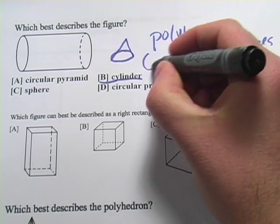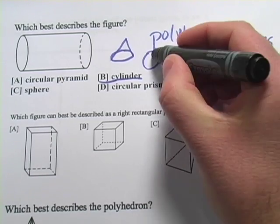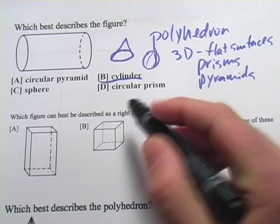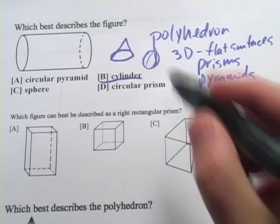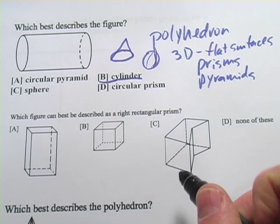A sphere, of course, is just a ball. And then a circular prism, I guess that might be a logical name, another name for a cylinder, but cylinder is our preferred term for that one.